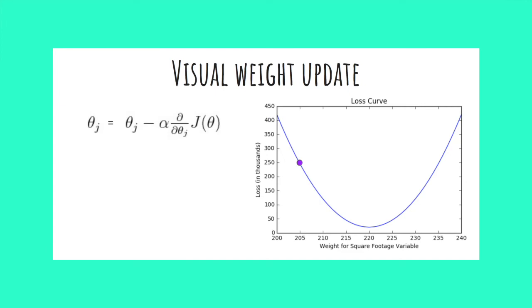Let's look at our example and walk through a weight update. We have our formula in the top left for reference. Remember, in simplest terms, we have our new weight equaling our current weight minus our learning rate times the slope of our tangent line.